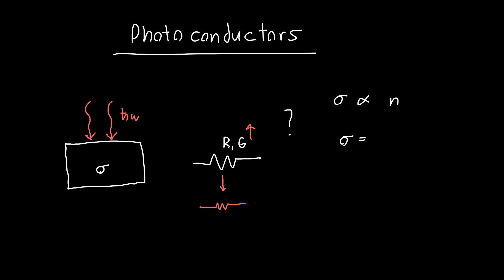The exact formula is Q times the mobility times the number of charge carriers, assuming this is an n-type semiconductor. If you wanted, you could add in the p-type term as well, Q mu_p times p.